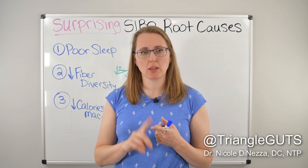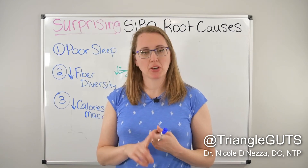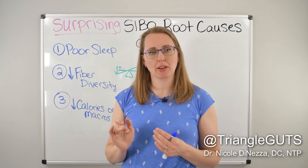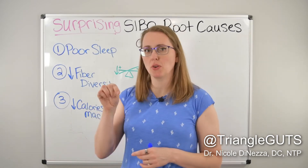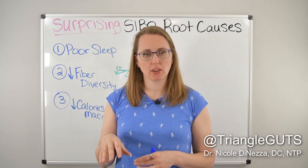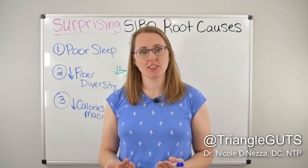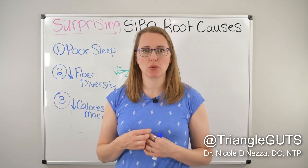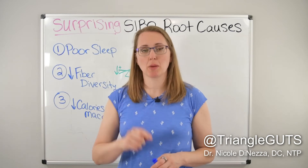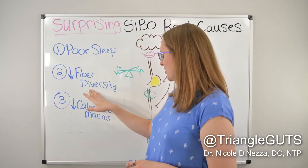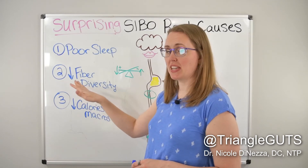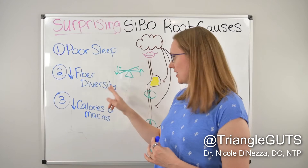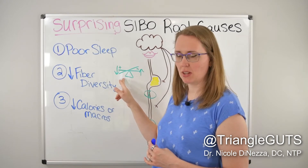There are two things you might want to download from that page. One is my microbiome diversity tracker tool — basically a modified food diary with goals, and I've linked a research article on why this is important. I also made a SIBO root cause guide covering these root causes, plus ones from the previous video, with resources and links so you can deep-dive any topic that resonates. If a lack of fiber diversity creates more dysbiosis, that theoretically should cause more symptoms, because dysbiosis is what tracks with symptom presentation — not just the degree of overgrowth.